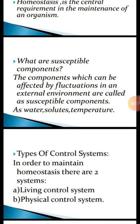Types of control systems. In order to maintain homeostasis, there are two main control systems. Number one is the living control system, and number two is the physical control system.